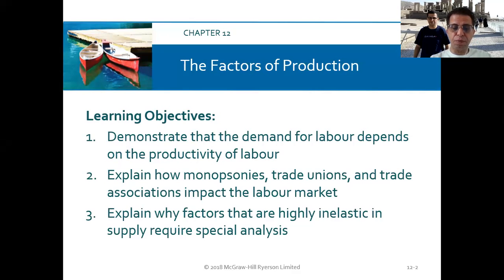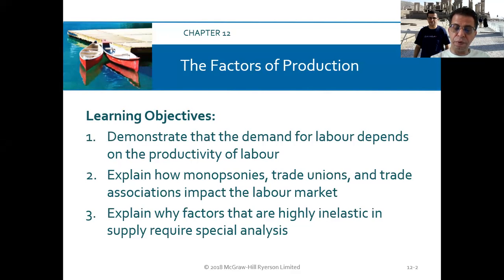In this chapter, we'll be demonstrating that the demand and supply for labor depends on the productivities of labor. We're also going to explain how monopsonies, trade unions, and trade associations impact the labor market, and explain why factors that are highly inelastic in supply require a special analysis.